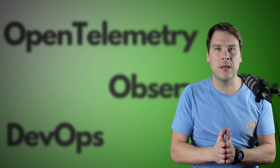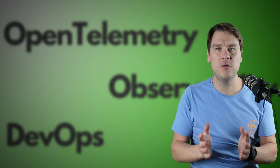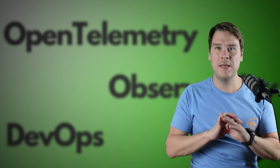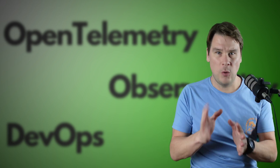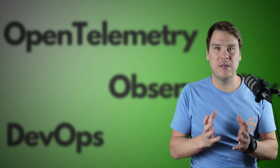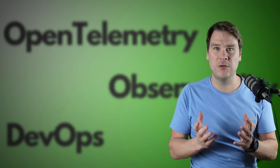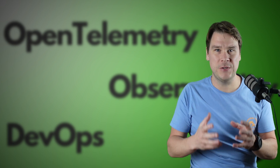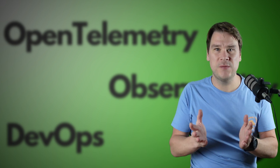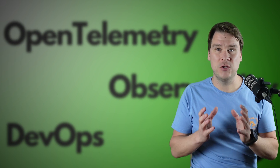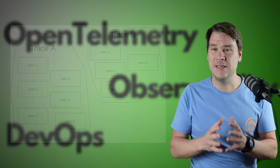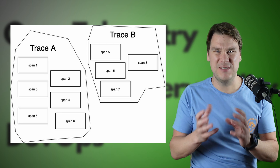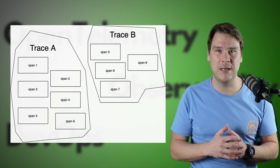Hey everyone, in this video I'm going to clarify two of the most misused words in OpenTelemetry. I hear these two terms misused all of the time, and I've done it myself with my trace pusher tool — it doesn't push traces, it pushes spans. So, spans versus traces — what's the difference? The short answer is that traces are a logical collection of spans, but let's dig into that with an example to make it clearer.